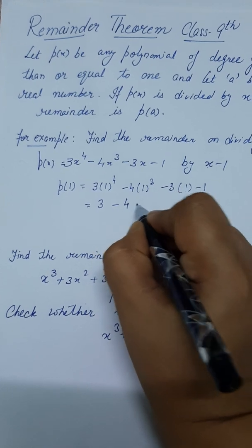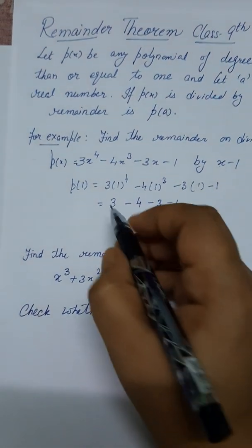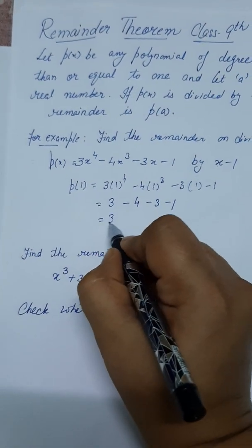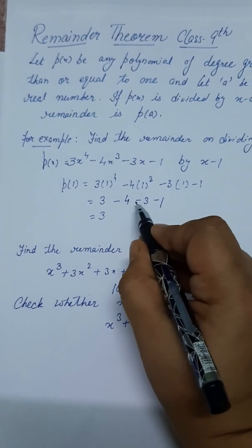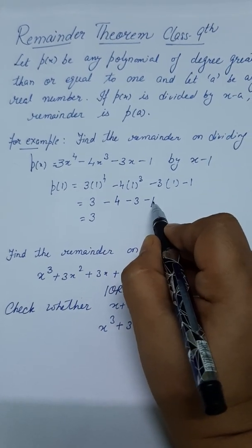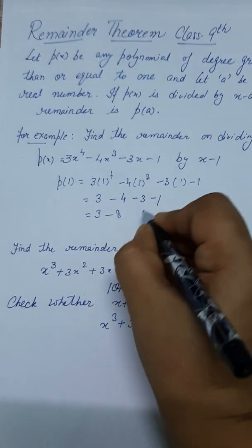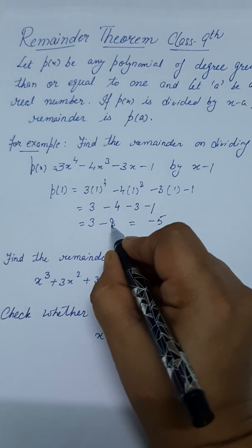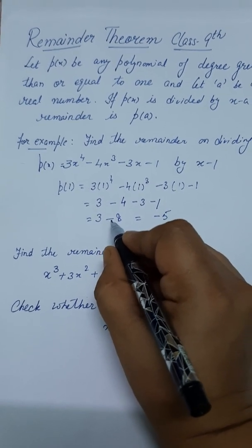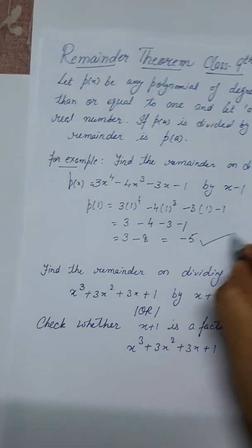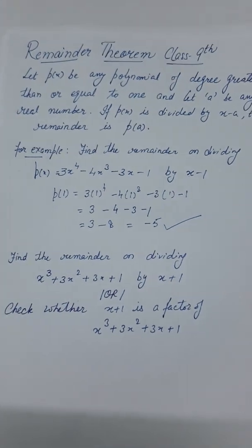It will be minus 4, minus 3, and minus 1. The positive numbers we add separately. The positive number is 3, and the negative are 4, 3, and 1. 4 and 3 is 7, 7 plus 1 is 8. So 3 minus 8 will be minus 5 because the bigger number has the negative sign. So this is the remainder.